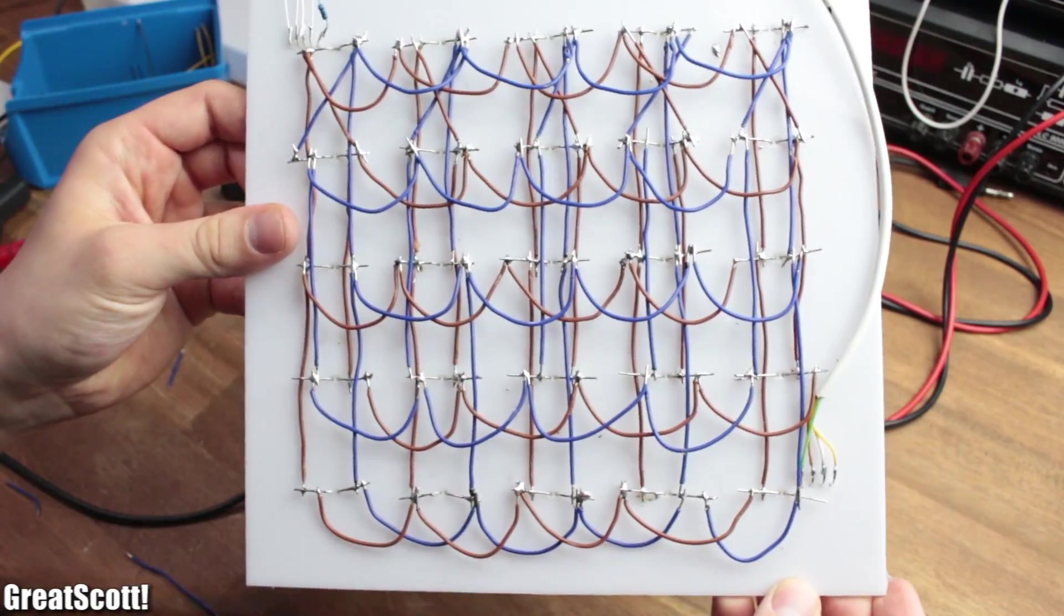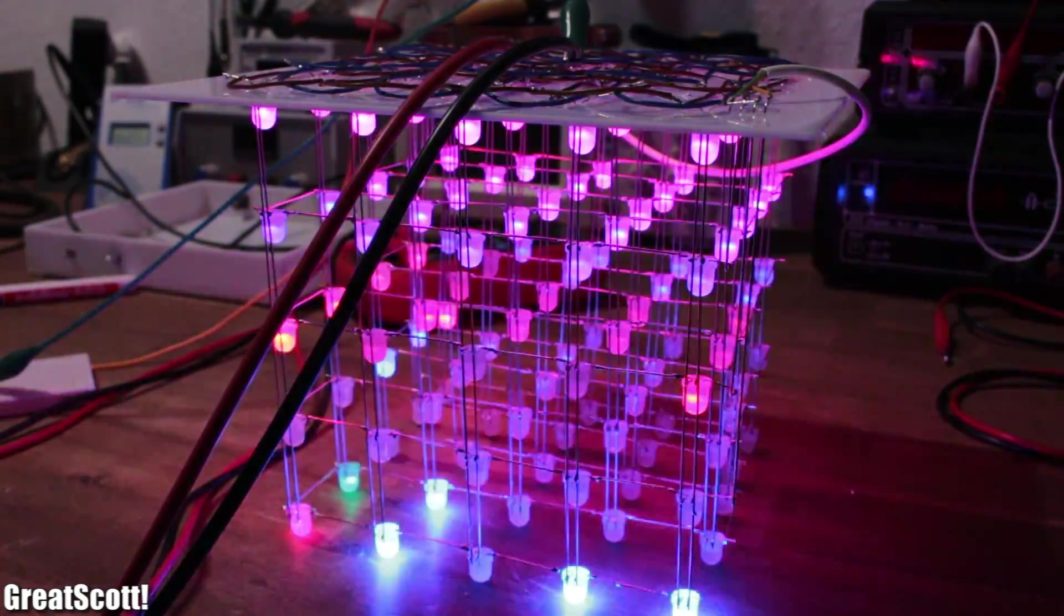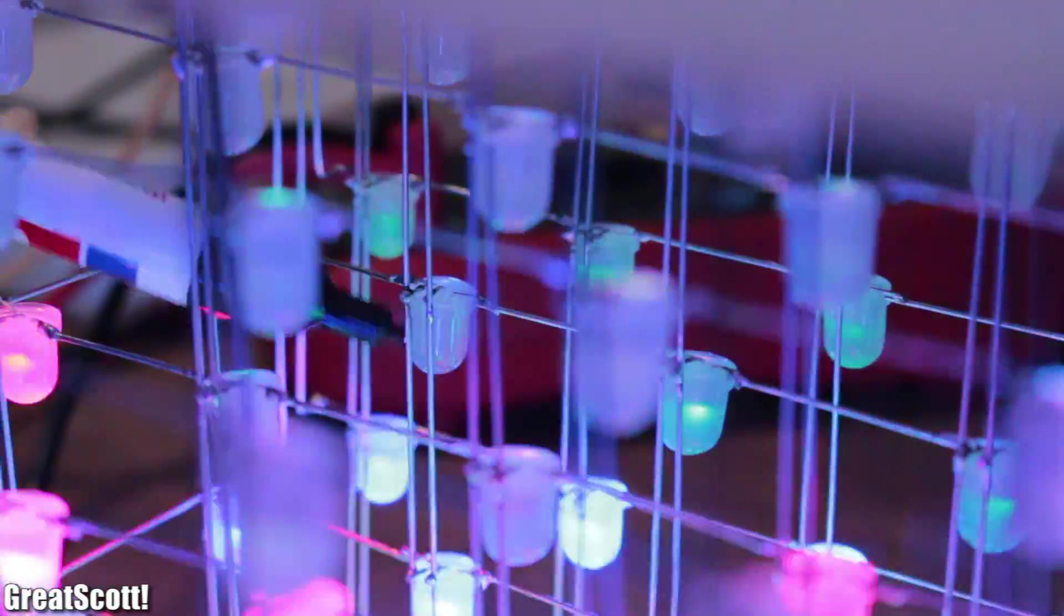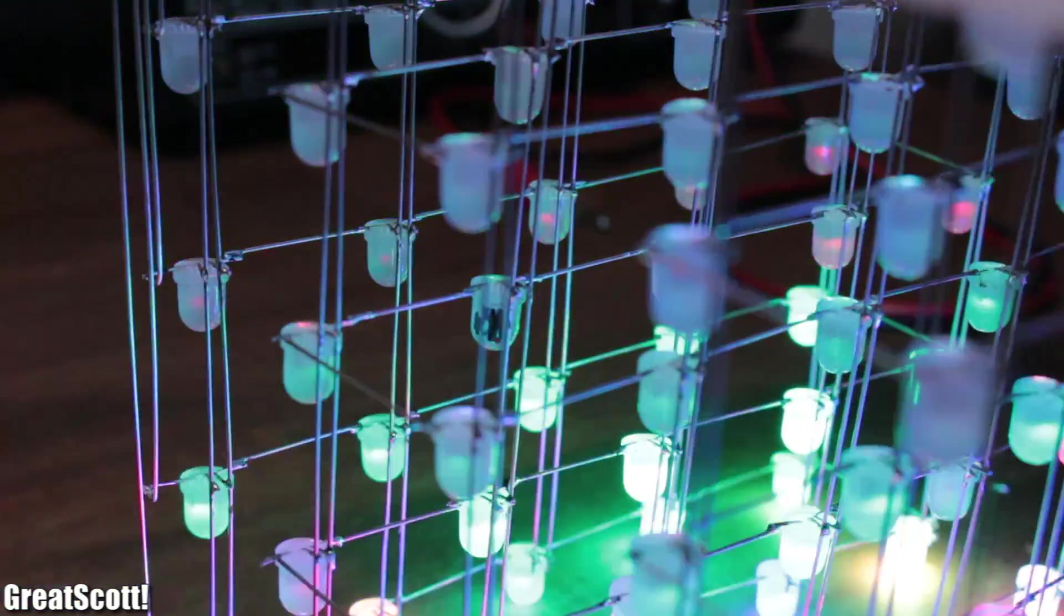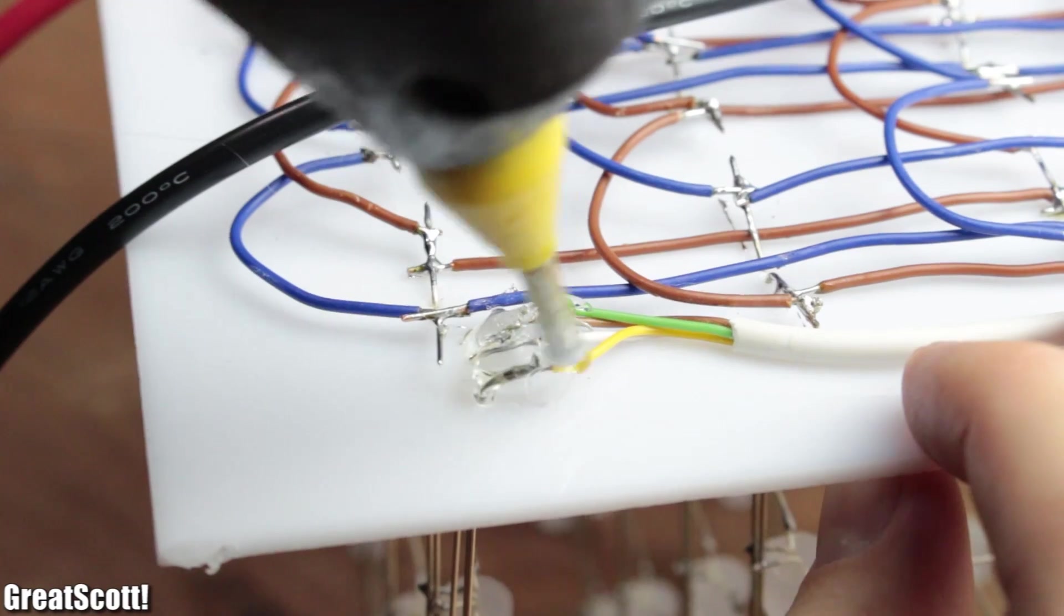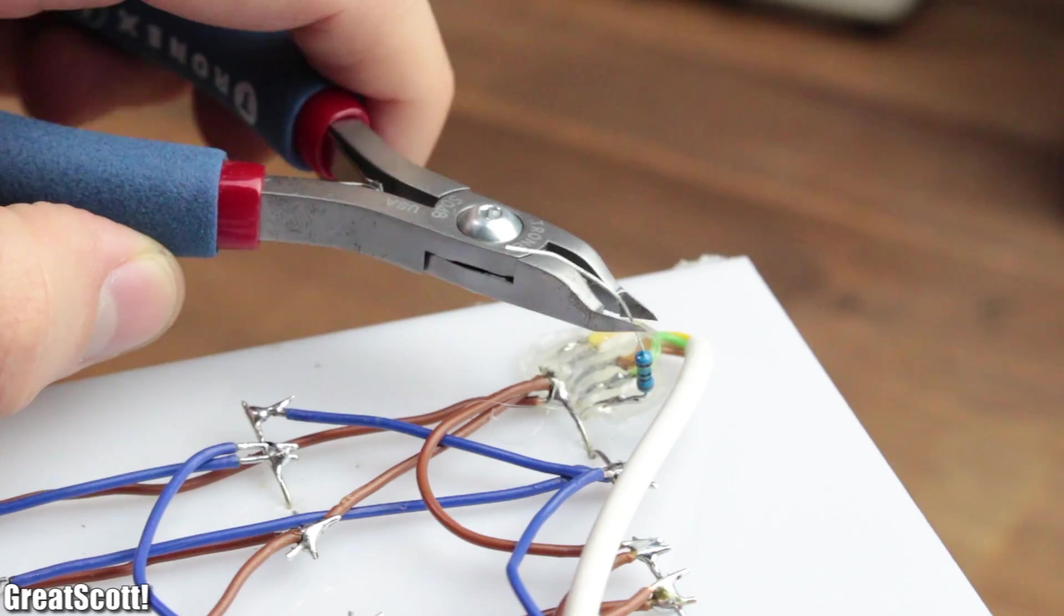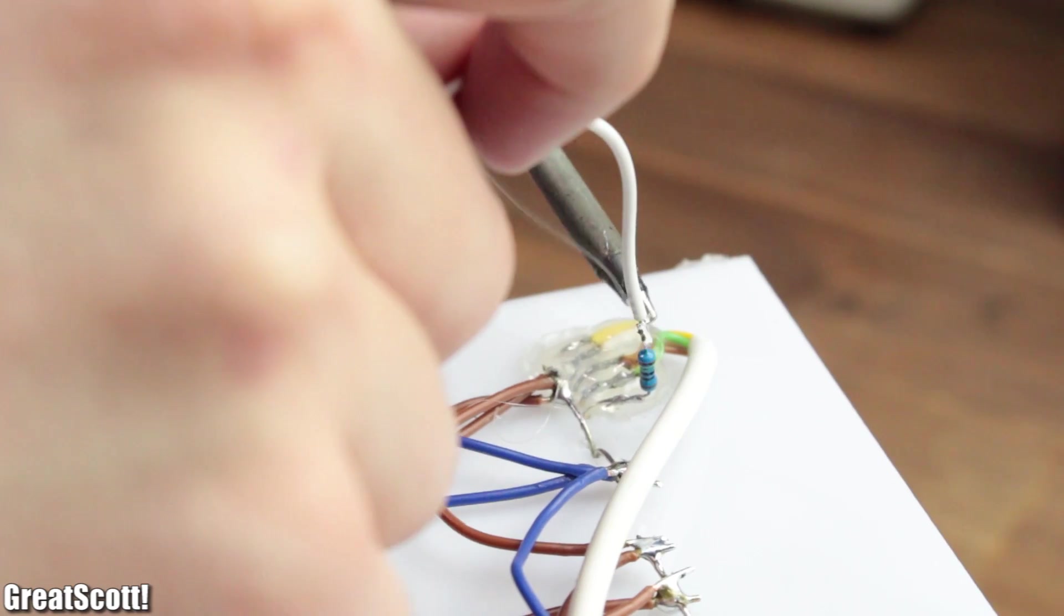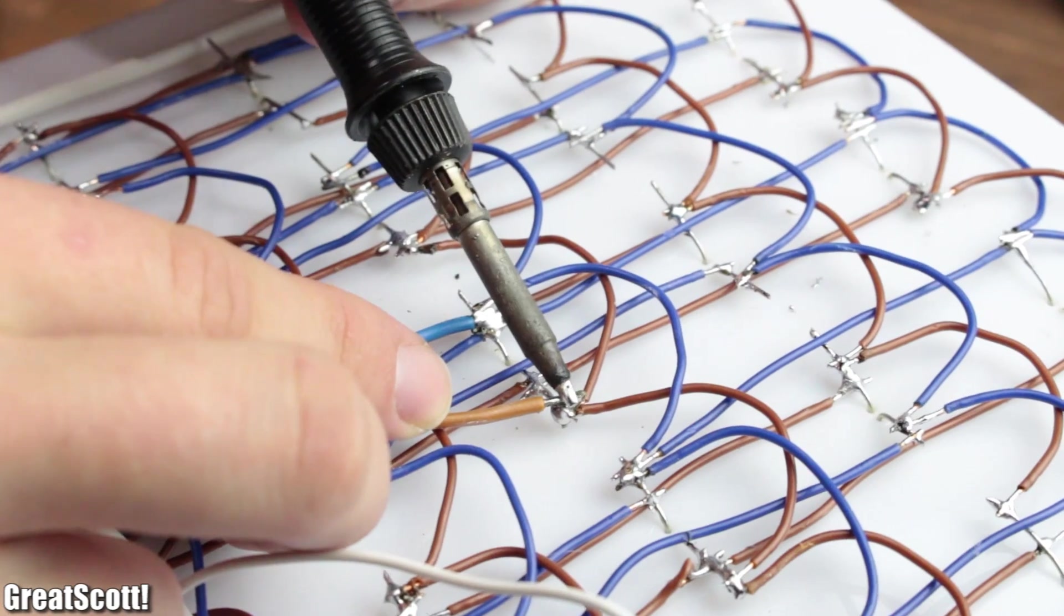Once the solder job was done, I tested the cube which still acted strange. The reason is that even though I tried to prevent this, one LED was damaged. After replacing it, the cube finally worked like a charm. And I celebrated this by gluing the data wire in place and soldering a thin wire to the 150 ohm resistor and a 1.5 square millimeter power wire to the joint VCC and ground pin.